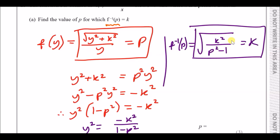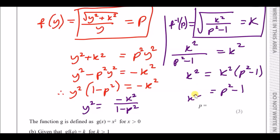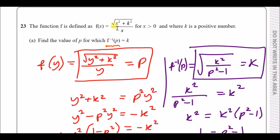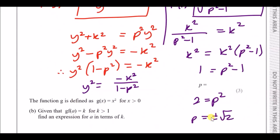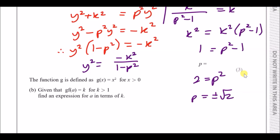Now set the inverse function equal to k: square root of k squared over (p squared minus 1) equals k. Square both sides: k squared over (p squared minus 1) equals k squared. Times (p squared minus 1) across: k squared equals k squared times (p squared minus 1). Divide by k squared: 1 equals p squared minus 1. Add 1: p squared equals 2, so p equals plus or minus root 2. Since k is positive, p must be positive, so p equals root 2.